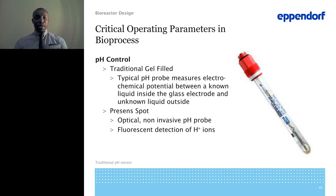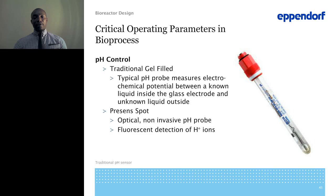For traditional pH control: a typical pH probe measures the electrochemical potential between the non-liquid inside the glass electrode and an unknown liquid outside. You can now get both invasive and non-invasive pH probes. The pH probe is essentially fluorescent — it detects hydrogen ions and converts that hydrogen concentration to give you a pH reading.